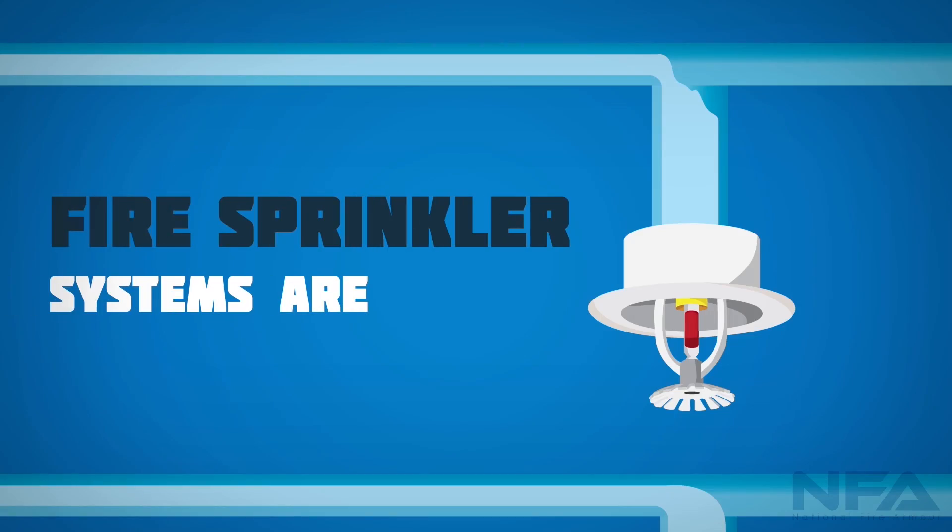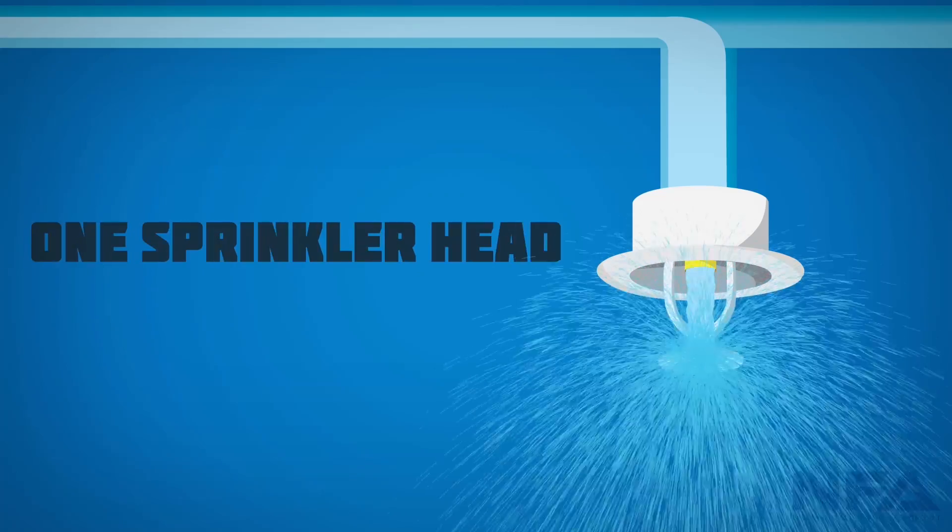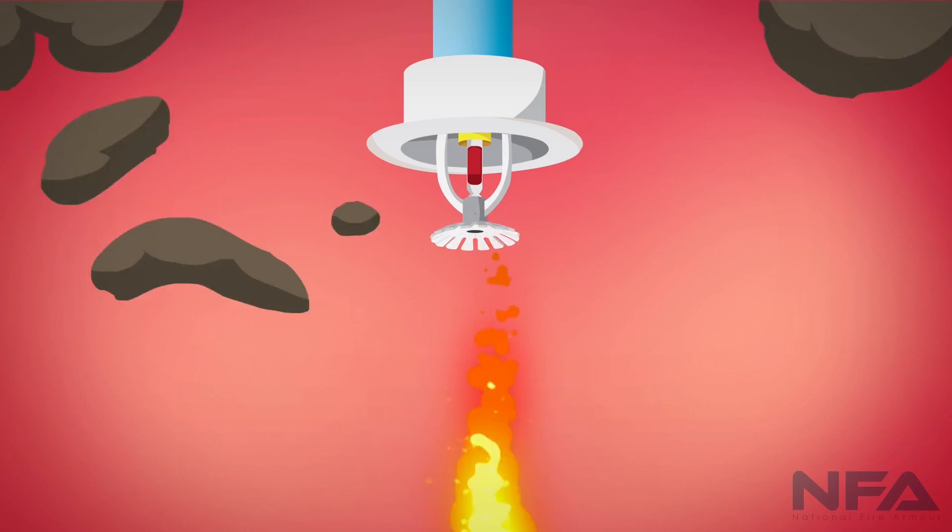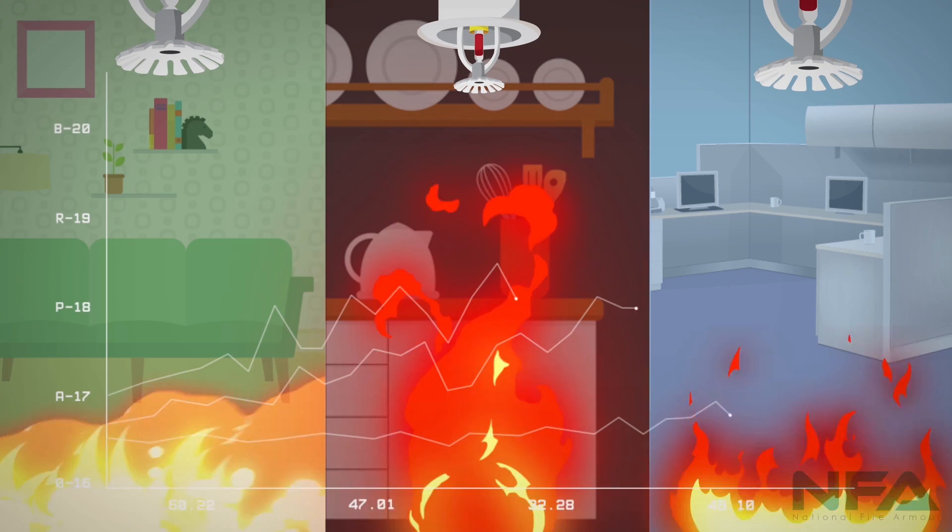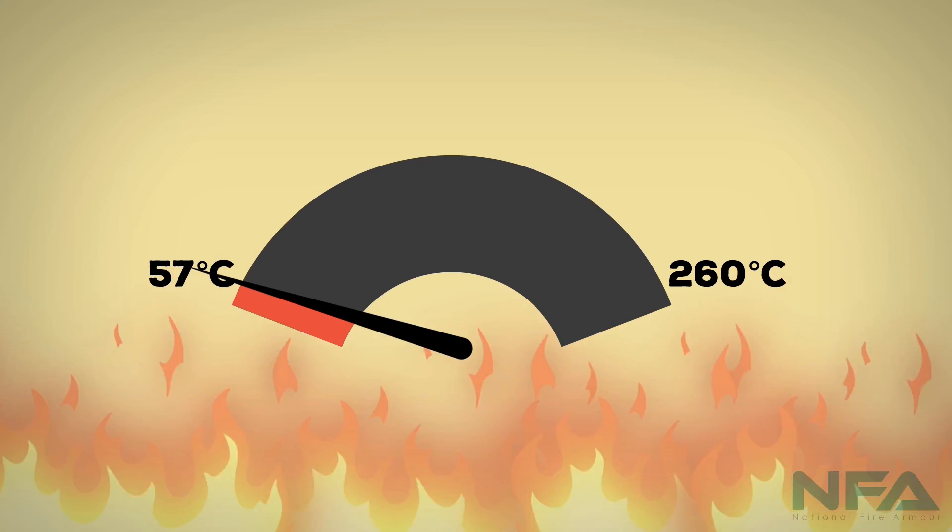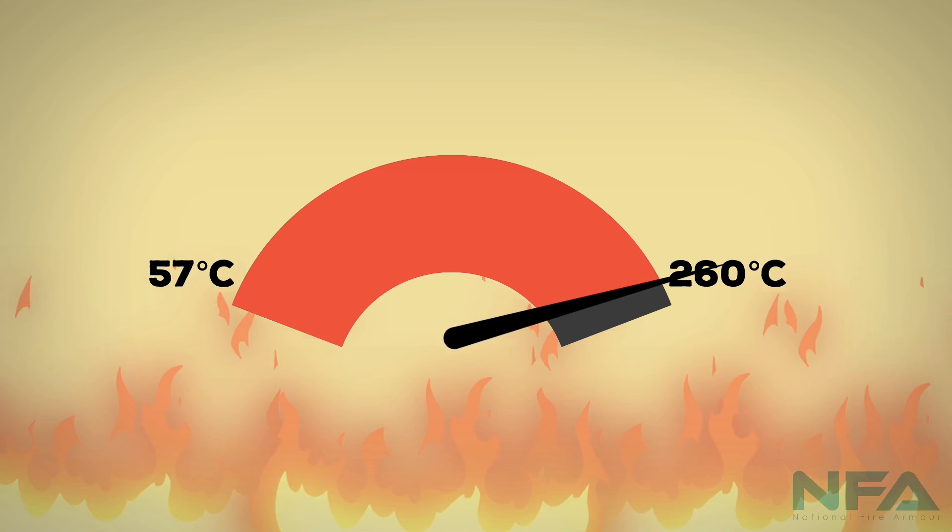Fire sprinkler systems are heat activated one sprinkler head at a time. The sprinkler head must detect a high enough temperature. Usually, there are different temperature ranges for sprinklers, starting from 57 degrees centigrade to 260 degrees centigrade, depending on the hazards.